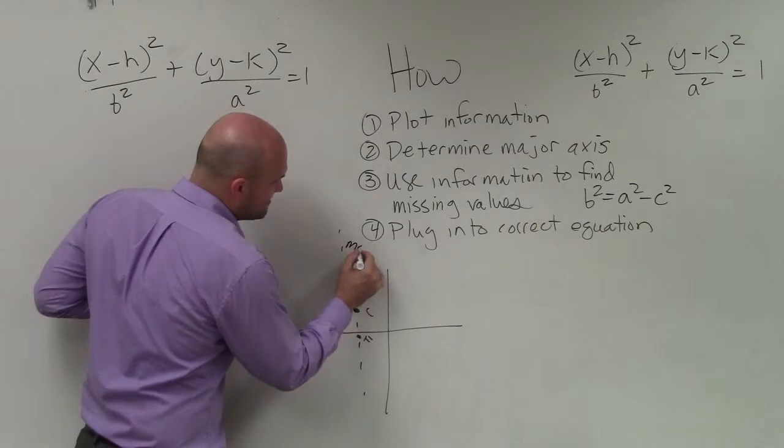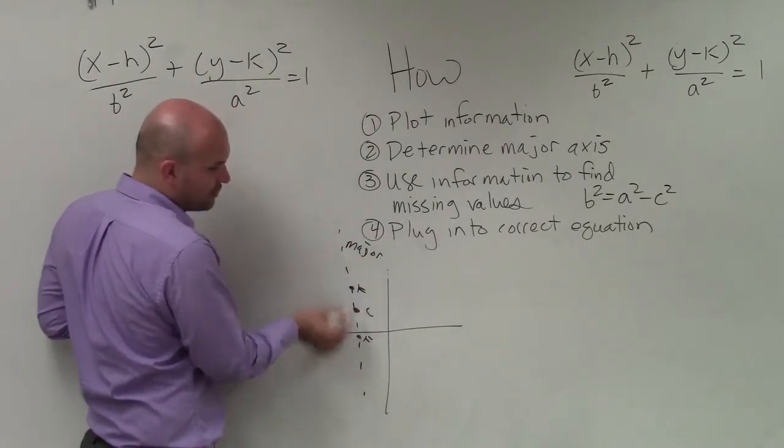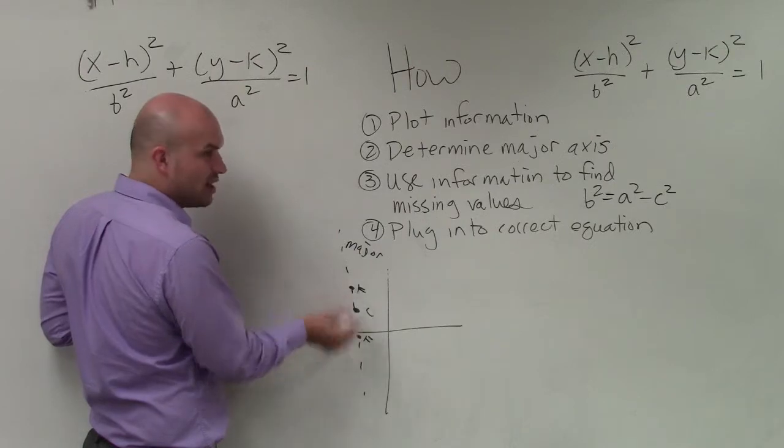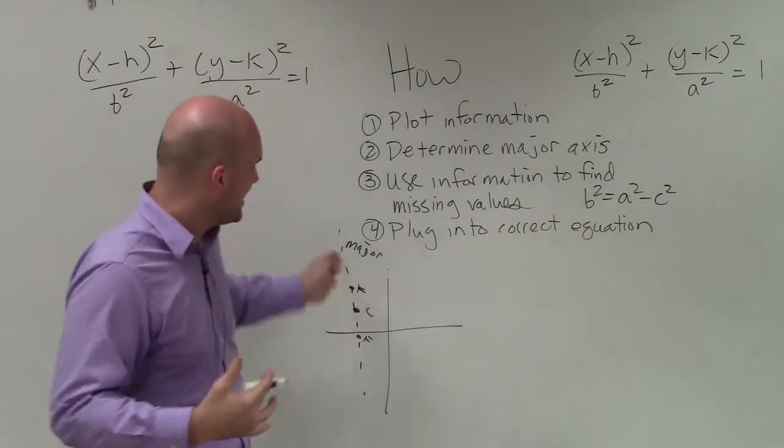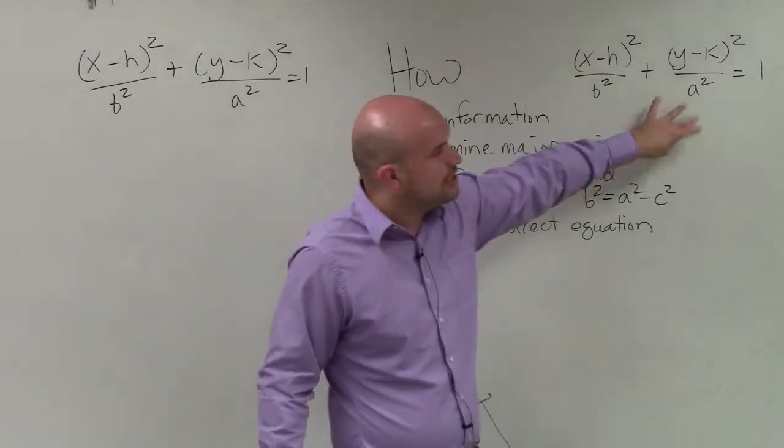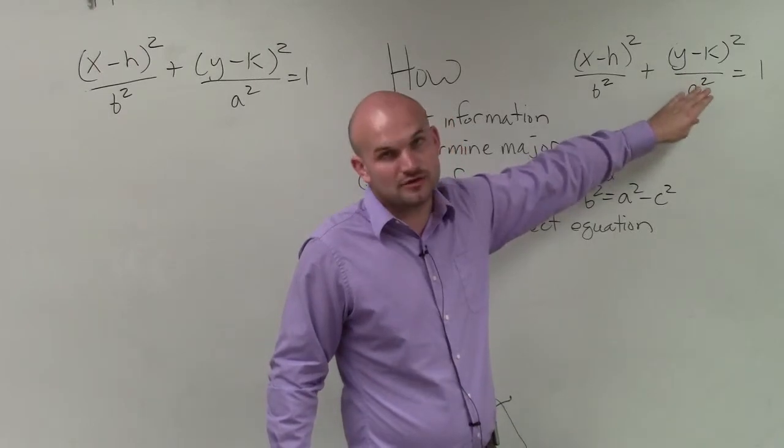So therefore, this has to be my major axis, because I can't write a horizontal major axis going through the foci and the center of this graph. So therefore, by knowing that information, I know that I have a major axis that's vertical, and therefore the equation that I'm going to be using would be this one, where my a squared is under the y.